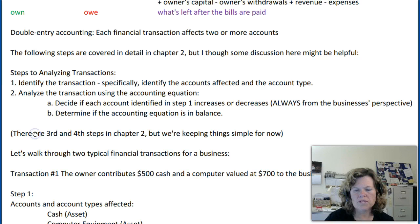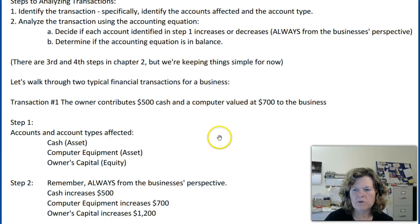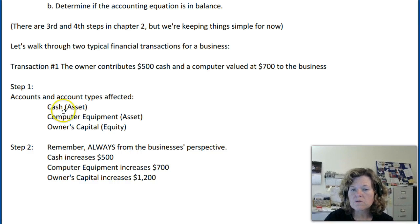There are a couple more steps in chapter two that we'll dive into later. For now, let's walk through two typical financial transactions. Transaction one: the owner contributes $500 cash and a computer valued at $700 to the business. Step one — we need to identify the accounts and account types affected. The owner is contributing $500 of cash, so cash is going to be affected. Cash is something the business owns, so it's considered an asset. The second account affected is computer equipment, which is also something the business owns and is considered an asset.